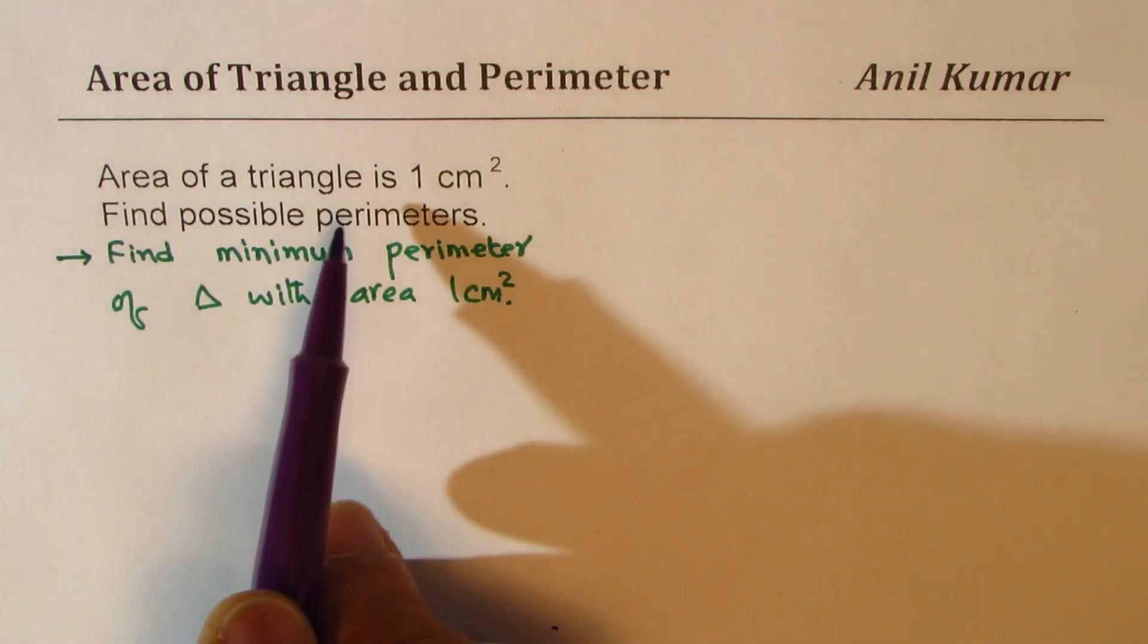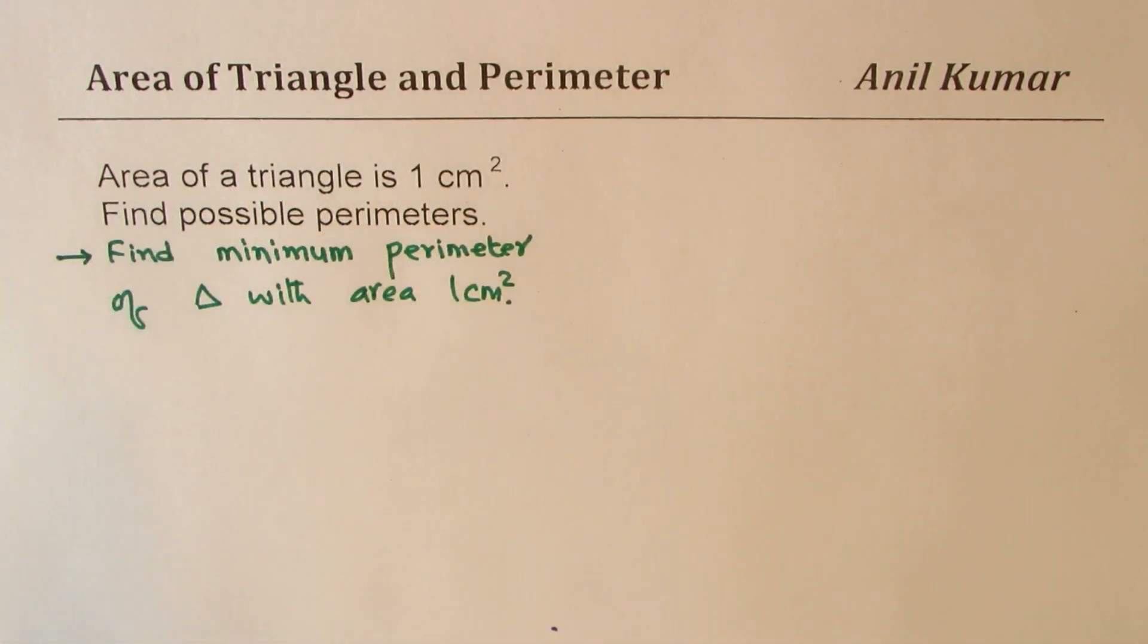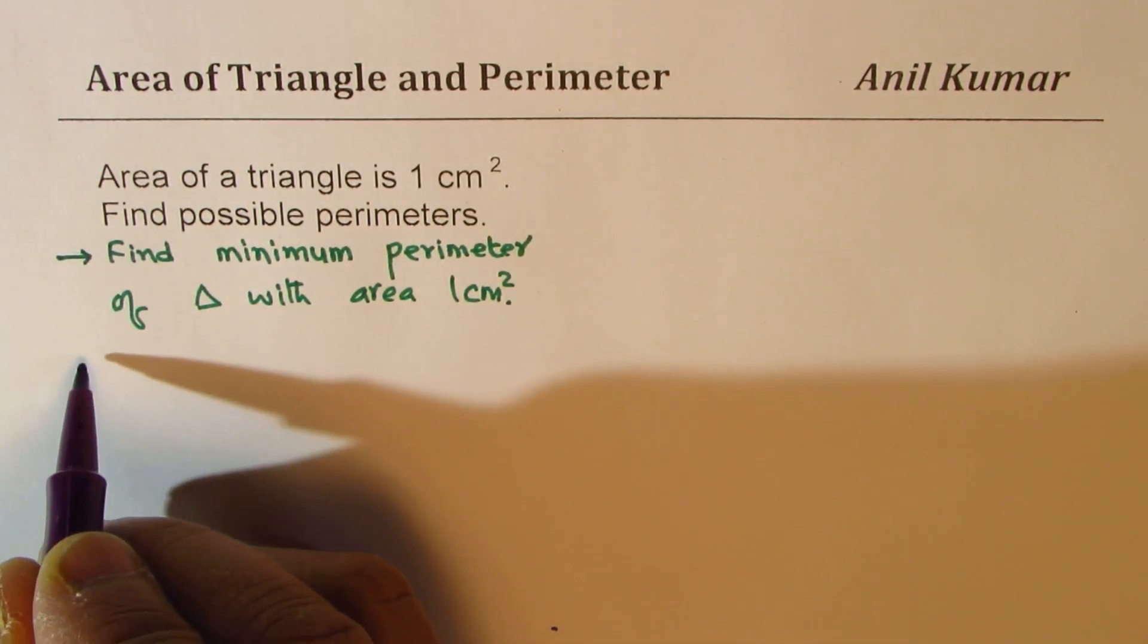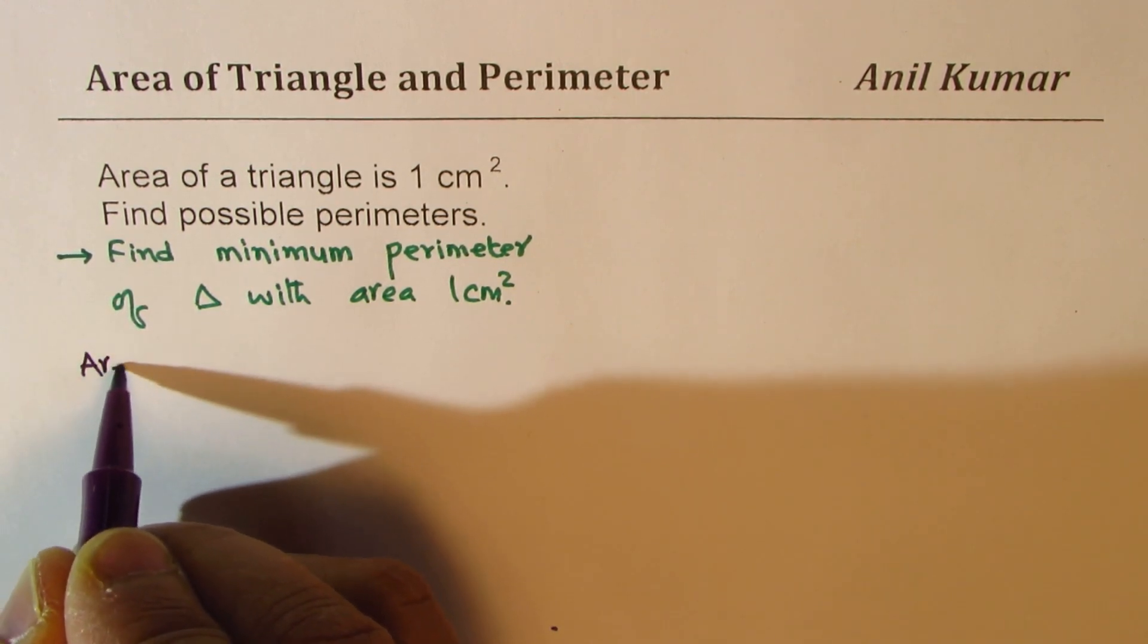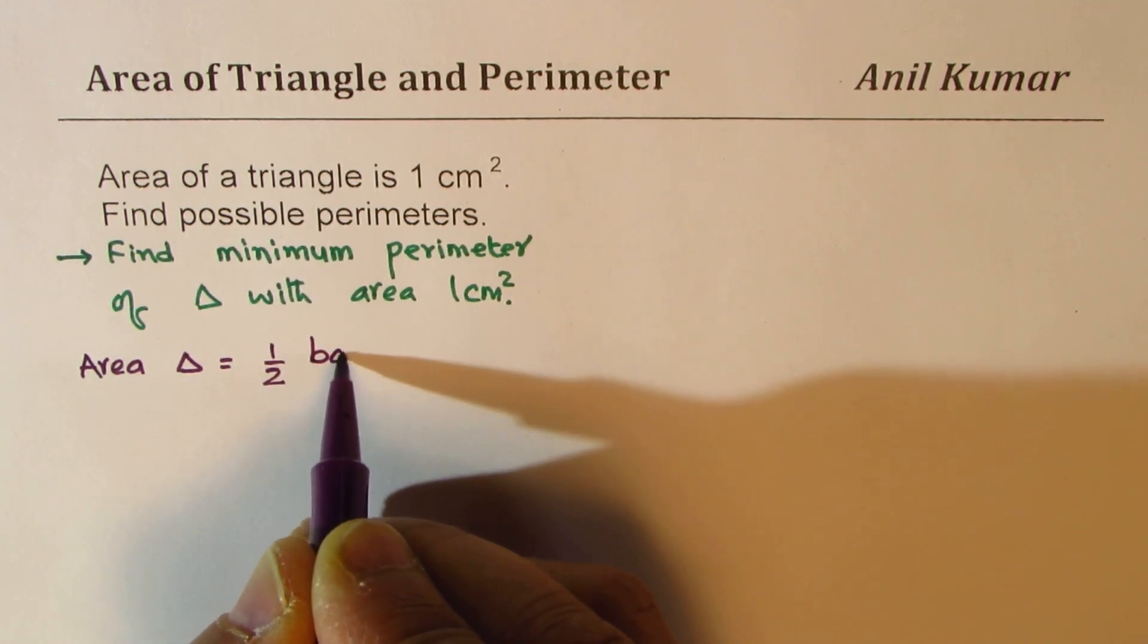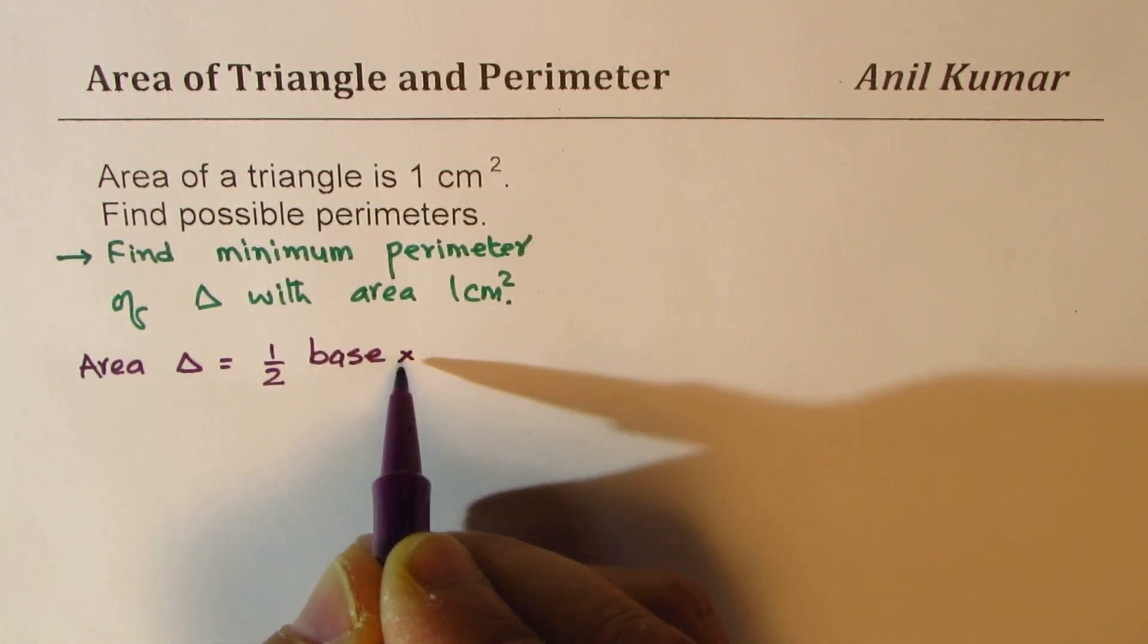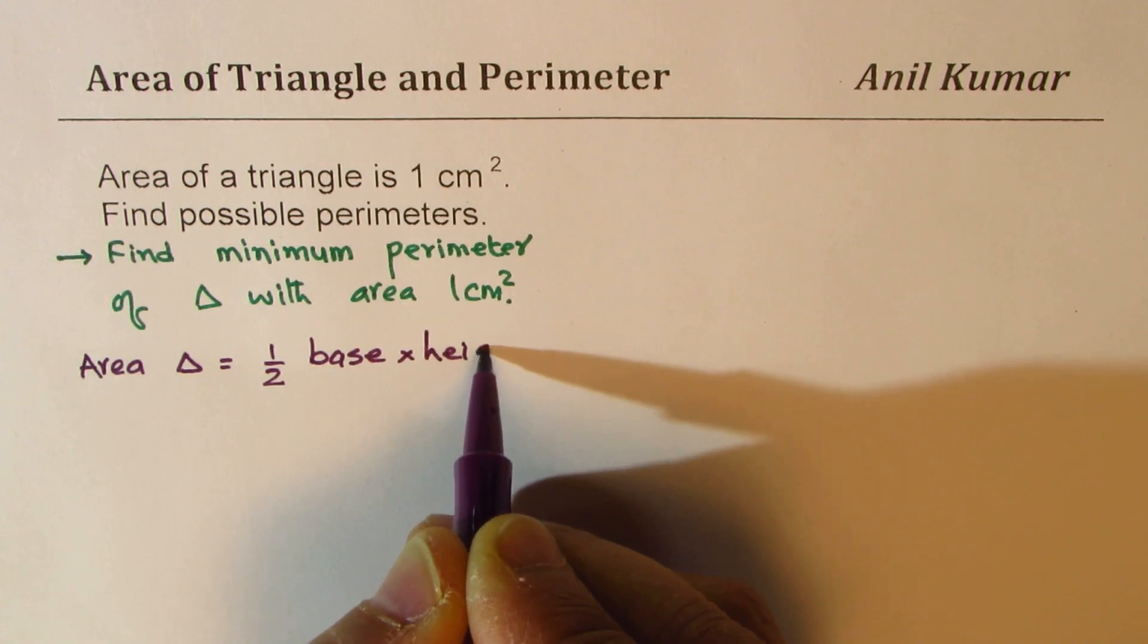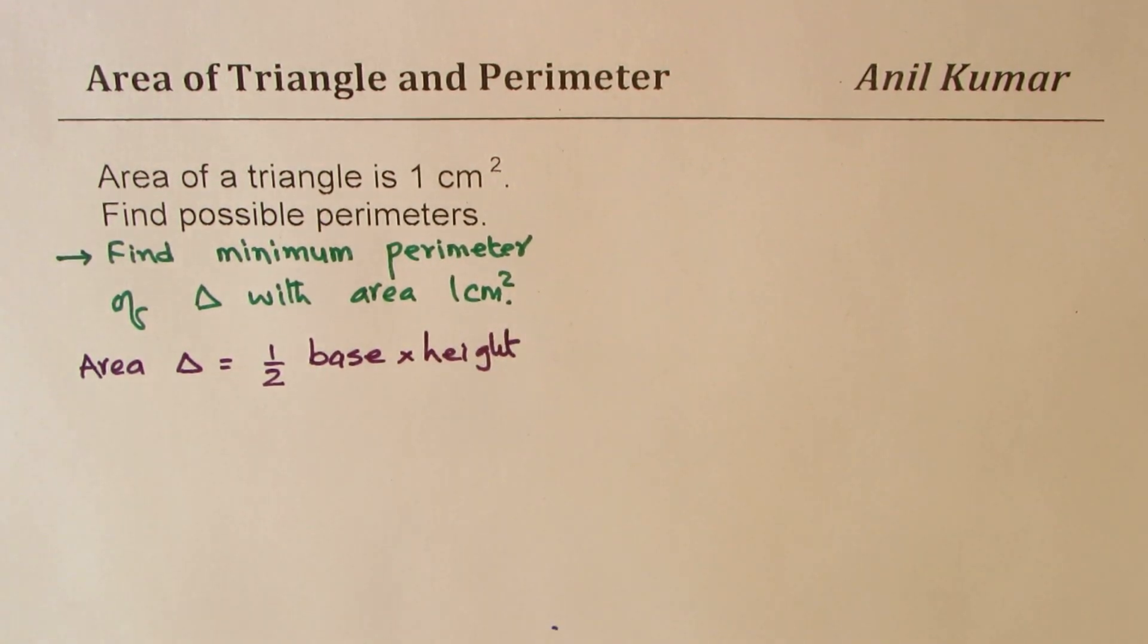What we really know about it is that area of triangle is half base into height. So we know the formula. Area of triangle is half base times height.